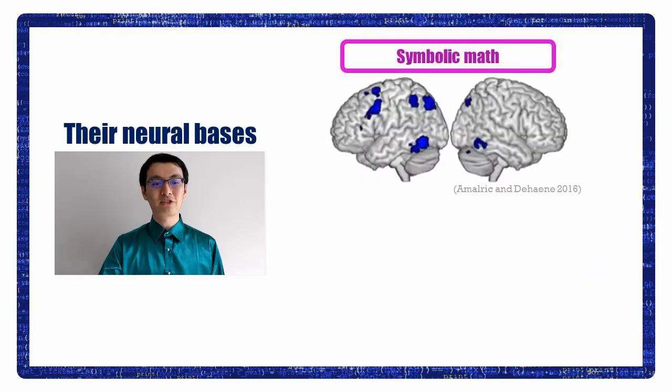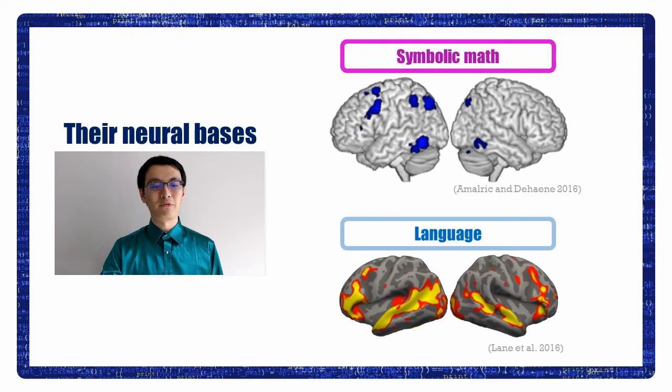But actually, both math and logic have been independently found to recruit brain regions distinct from the canonical language network. Here is the brain activation pattern for math and mathematicians. It is completely different from the brain regions involved in language comprehension, also shown here.